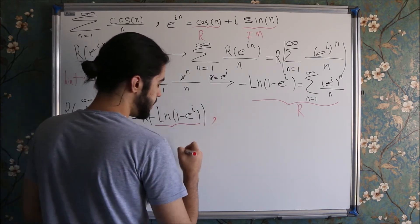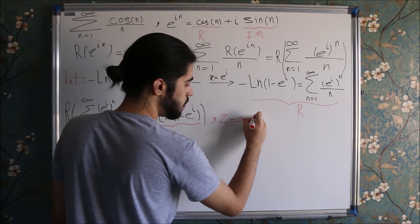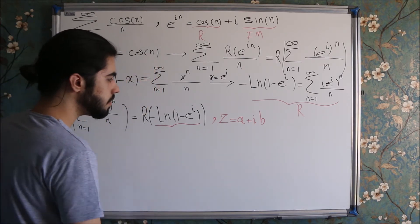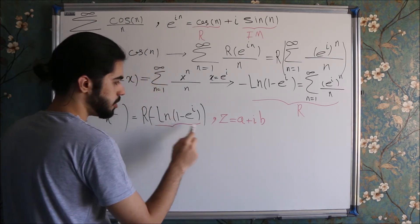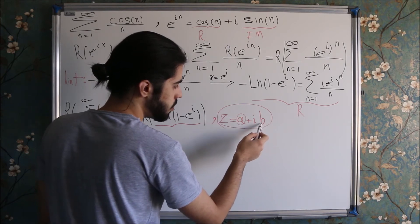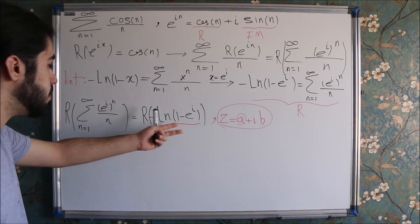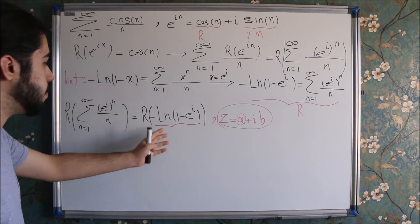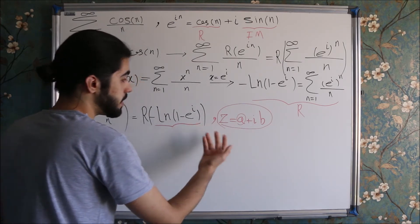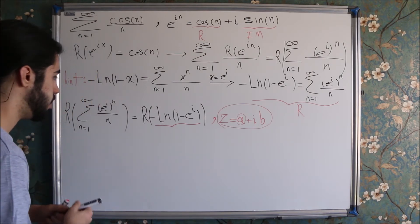For finding the real part, it's easy if we turn this expression into the form a plus i times b, where a and b are both real numbers. If we turn this expression into that form, we can easily identify the real part, which is a, and the imaginary part, which is b. Right now it's very complicated to find the real part in this form, so we can do some tricks.